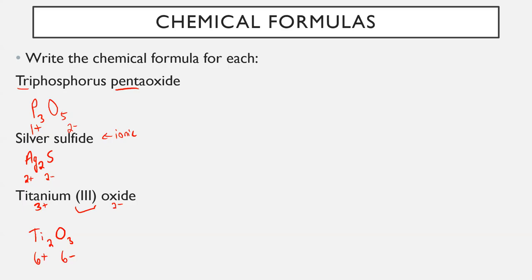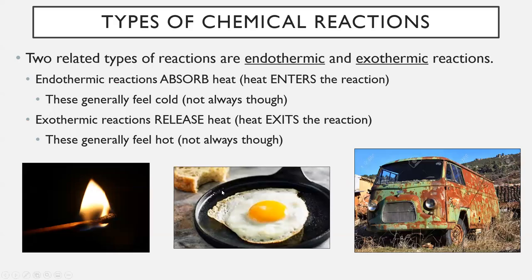Naming and writing formulas for ionic and molecular compounds is arguably the most important thing we cover in all of Science 9. Now, the other things you need to understand are types of chemical reactions. You need to know the difference between endothermic and exothermic reactions. Endothermic reactions are where heat enters the reaction — endo means enters. These will generally feel cold, but not always; they're just absorbing heat to perform the chemical reaction. Exothermic reactions release heat — the heat is exiting the reaction. These will generally feel hot, but again, not always.